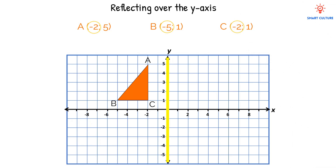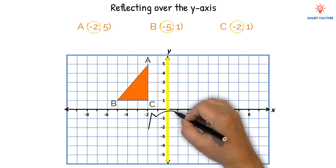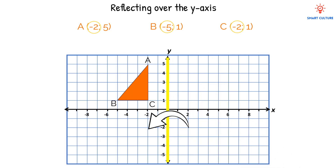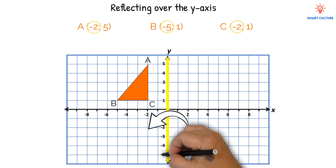The reflection essentially flips the image across the y-axis, changing the direction along the horizontal axis. As a result, positive x-values become negative and negative x-values become positive.